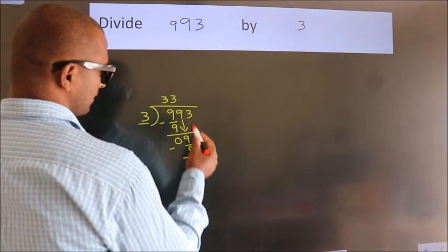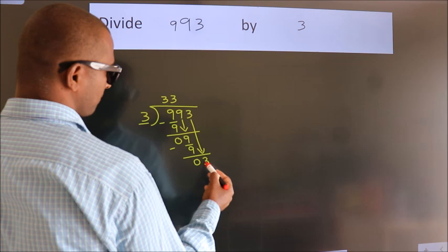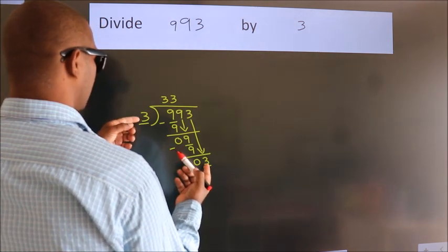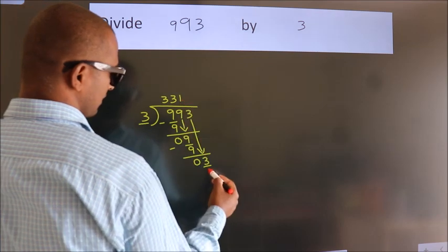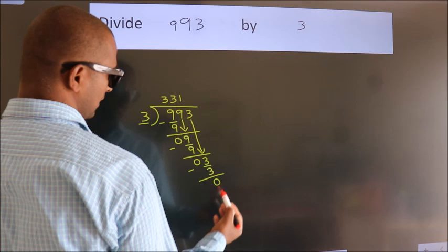After this, bring down the beside number. So, 3 down. When do we get 3? In the 3 table, 3 once is 3. Now, we subtract and get 0.